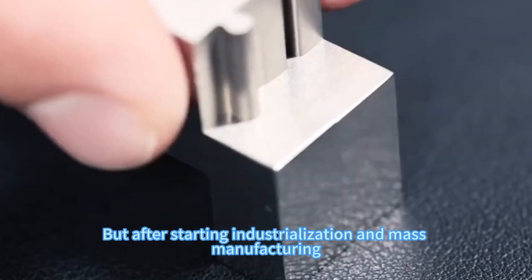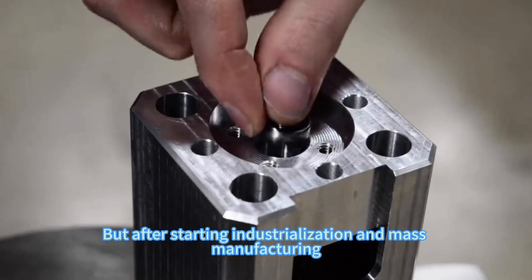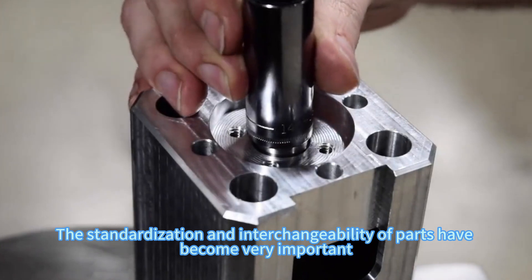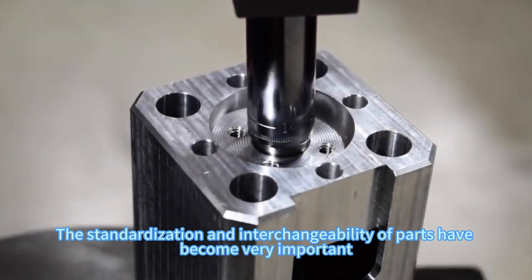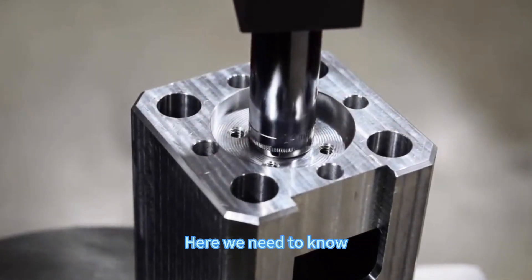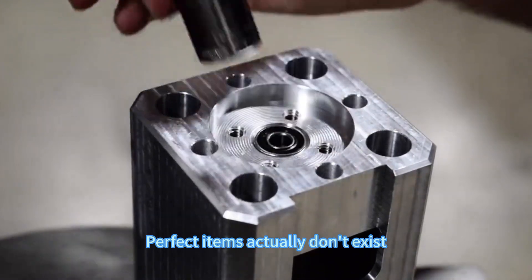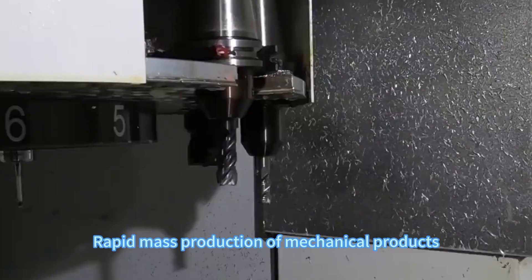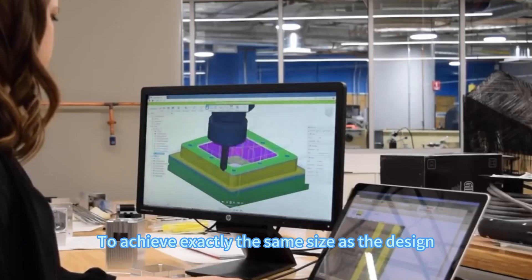But after starting industrialization and mass manufacturing, the standardization and interchangeability of parts have become very important. Here we need to know perfect items actually don't exist.